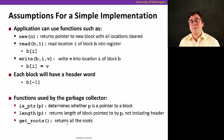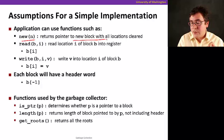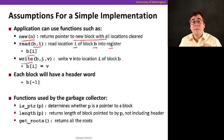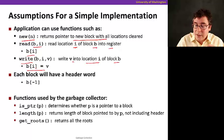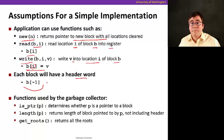So let's think at a simple implementation, but we need some assumptions for that. First, this function new here with n returns a pointer to a new block with all locations cleared. And read b,i reads the location i of block b into a register. And write b,i and v writes v into location i of block b. So it just said, you know, location i to block b receives v. And each block's going to have a header word that's pointed by b minus 1. So having these restrictions here, if we're going to use these functions, if applications use these functions, now we can actually keep track of what is pointers and what is location, what's being used and so on.